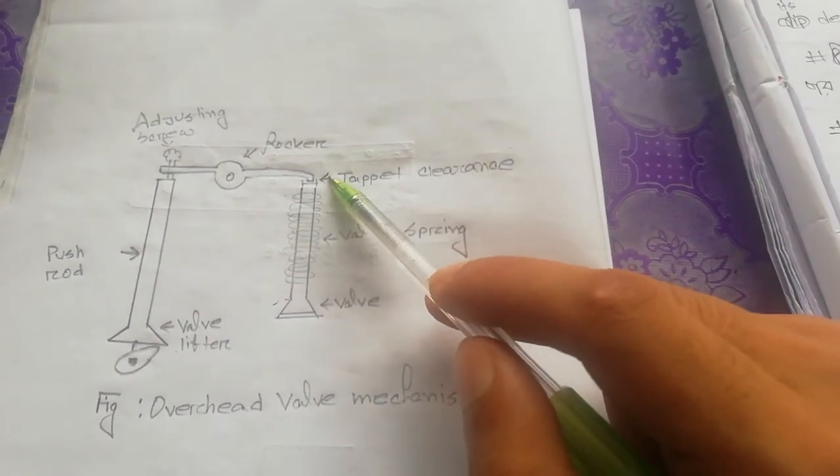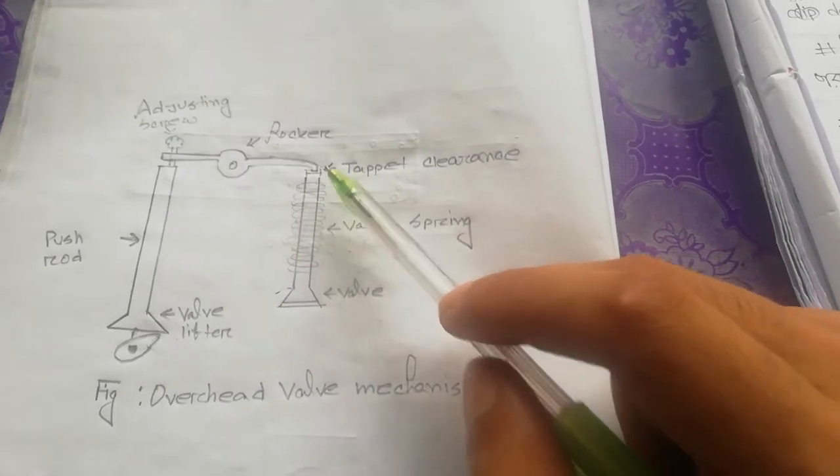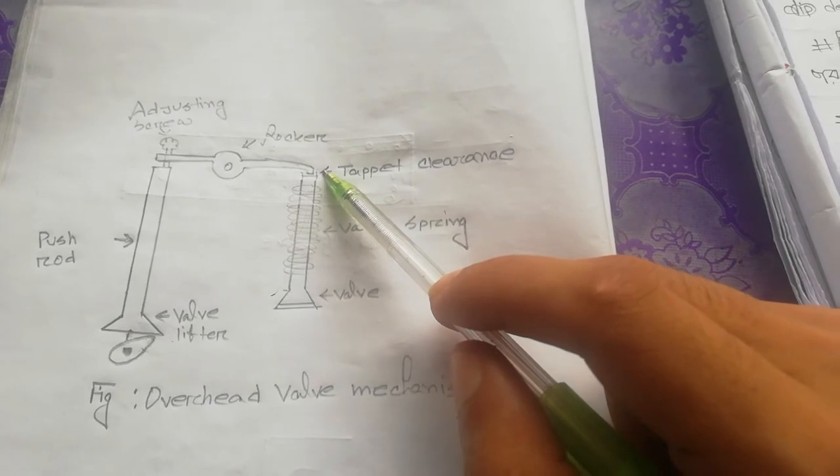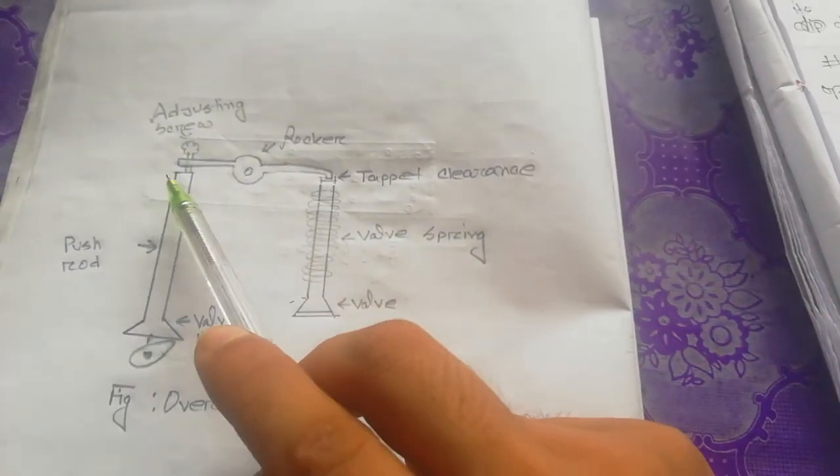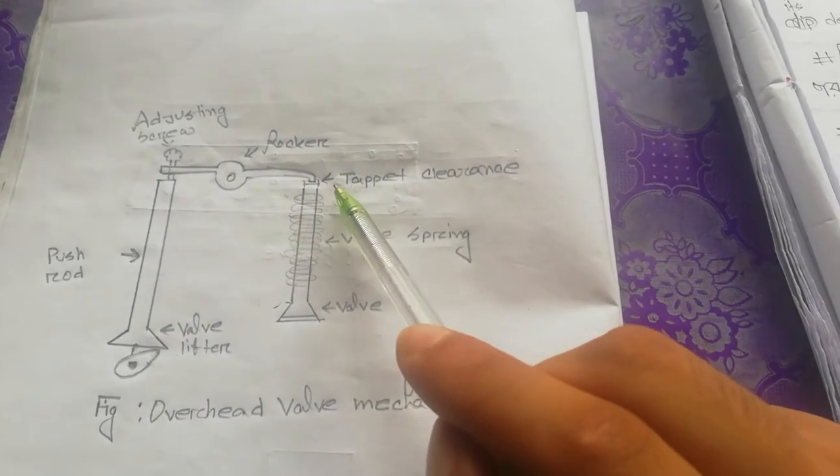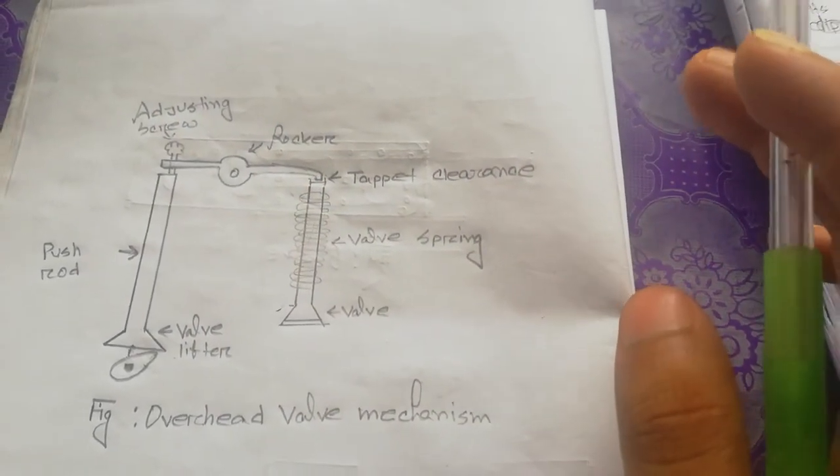Here we have tappet clearance. For our rocker arm and the valve at the top, we have tappet clearance. We will adjust the tappet clearance to our specific specification.